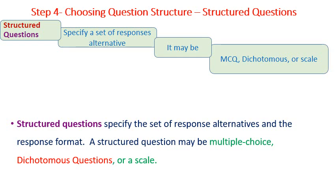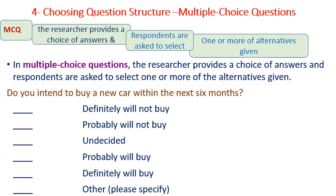Number two: structured questions. They specify a set of response alternatives. They may be multiple choice (MCQ), dichotomous, or scale. MCQ: the researcher provides a choice of answers and respondents are asked to select one or more alternatives. Example: 'Do you intend to buy a new car within the next six months?' Choices: definitely will not buy, probably will not buy, undecided, probably will buy, definitely will buy, or others — please specify.